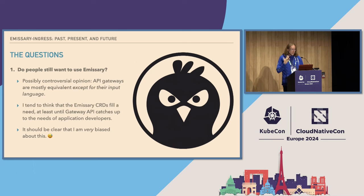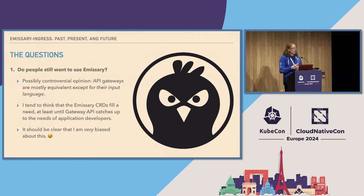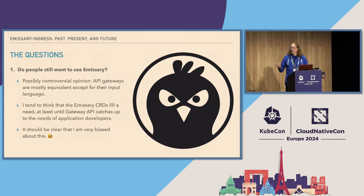I think Emissary's input language is useful, especially because if you look at the Gateway API — the other obvious place to look — Gateway API is not really caught up yet with the needs of an application developer who doesn't really care a lot about Kubernetes. Gateway API is still a bit focused on the platform engineer. I'm very biased, but I definitely believe that if you are coming into the cloud native world and trying to just get stuff done, there's a place for the Emissary input language in helping you get your stuff done.